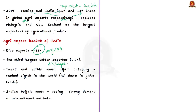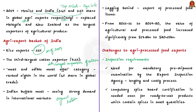In the meat and edible offal category — offal being the heart and other organs of an animal used as food — India was ranked 8th in the world with a 4% share in global trade. Indian buffalo meat is seeing strong demand in international markets due to its near-organic nature. However, India is lagging behind in export of processed food items. From 2015-16 to 2019-20, the value of agricultural and processed food exports increased significantly from 17.8 billion to 20.65 billion dollars.